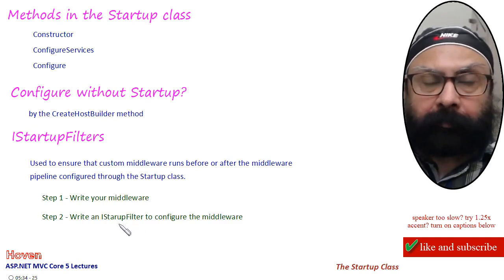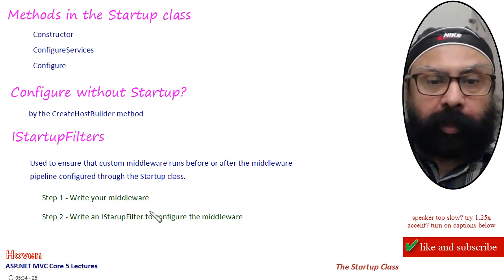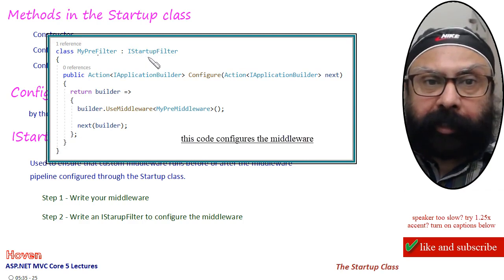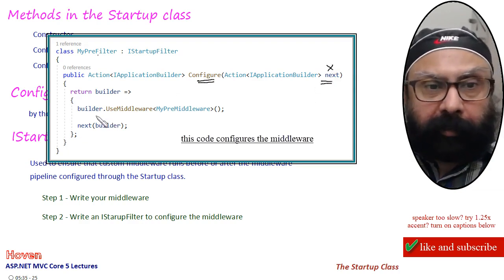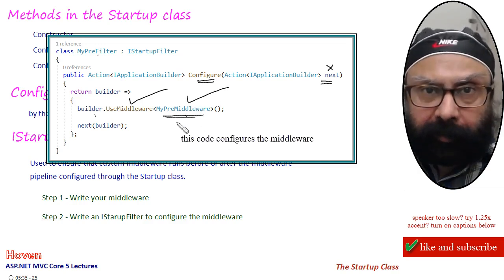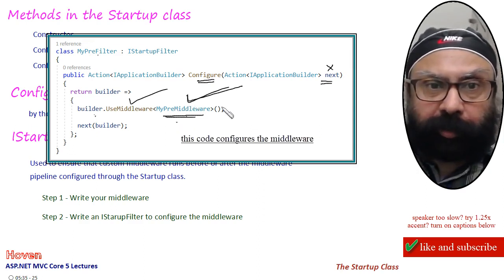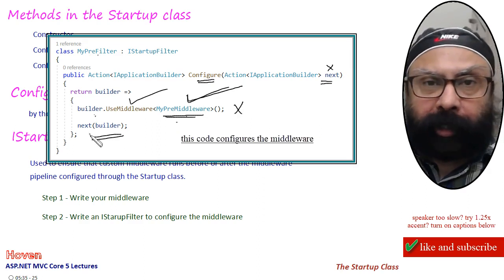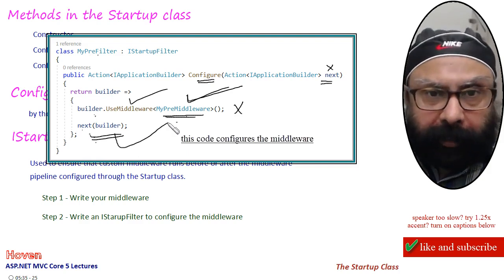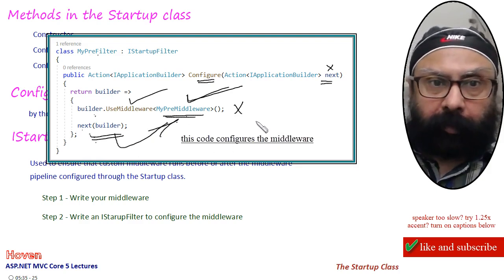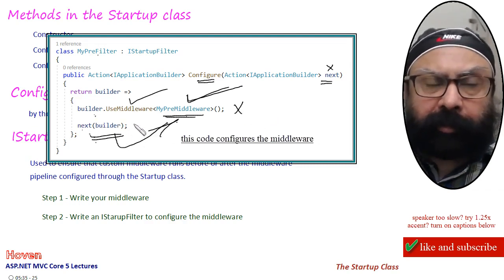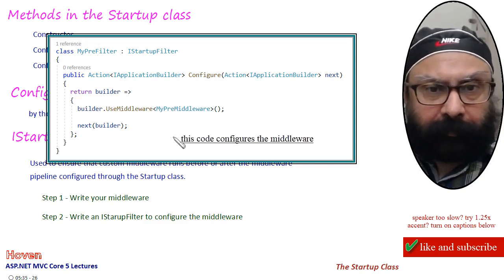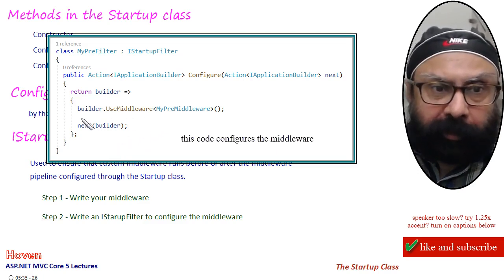Step 2 is to write an IStartupFilter to configure the middleware. A class MyPreFilter implements IStartupFilter. Its Configure method receives an application builder delegate, and here you tell that we are going to use this middleware — MyPreMiddleware. This tells the ASP.NET engine that this middleware has to be used. The boilerplate also passes the call to the next config, since you can have two or three IStartup filters chaining together. This is mostly a skeleton that you can use to write your own component.